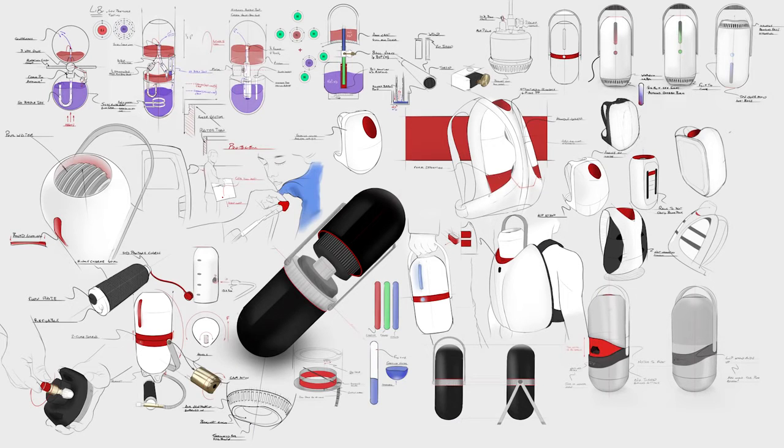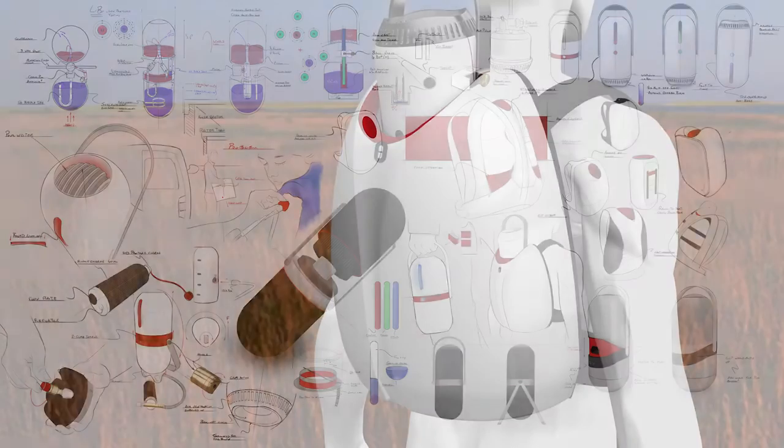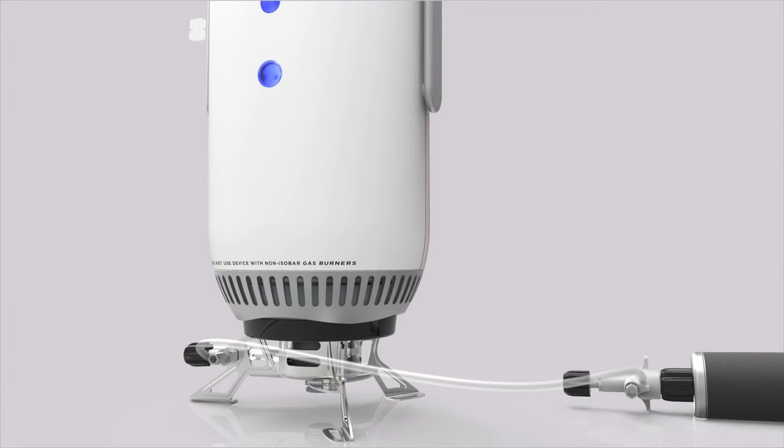Isobar is a system of three components. First of all, there's the backpack which stores the vaccine. Second is the cooling unit, and third is the propane burner.